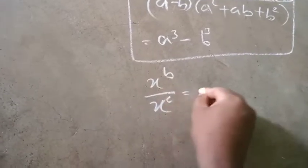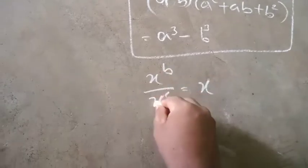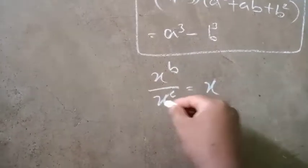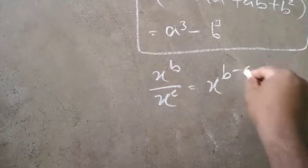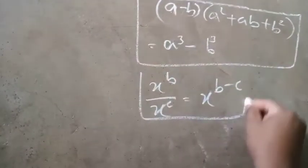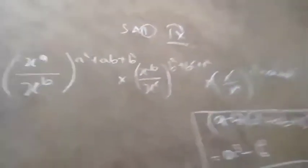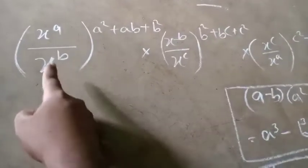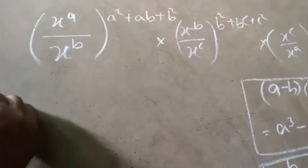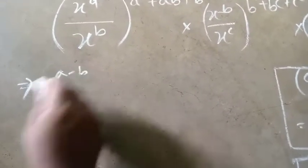So we have x to the power b minus c. This is going to be done by a minus c. The plan is what we call x to the power a by x to the power b, so that is what we call x to the power a minus b.